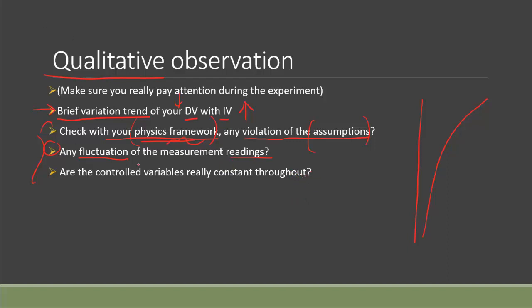Another important thing is that throughout the experiment there should be certain control variables you take care of. But are they really constant throughout the whole experiment? That's the issue, because if the control variable is changing even by a little bit, it may affect your measurement of the dependent variable or your prediction.